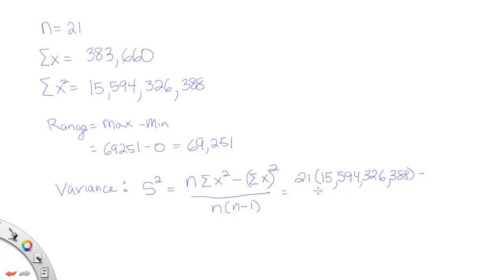But for now, let's continue with filling in the formula. So I have n, and I have the summation of x squared, and then I have the summation of x squared. So this quantity, 383,660, and I want to square that.